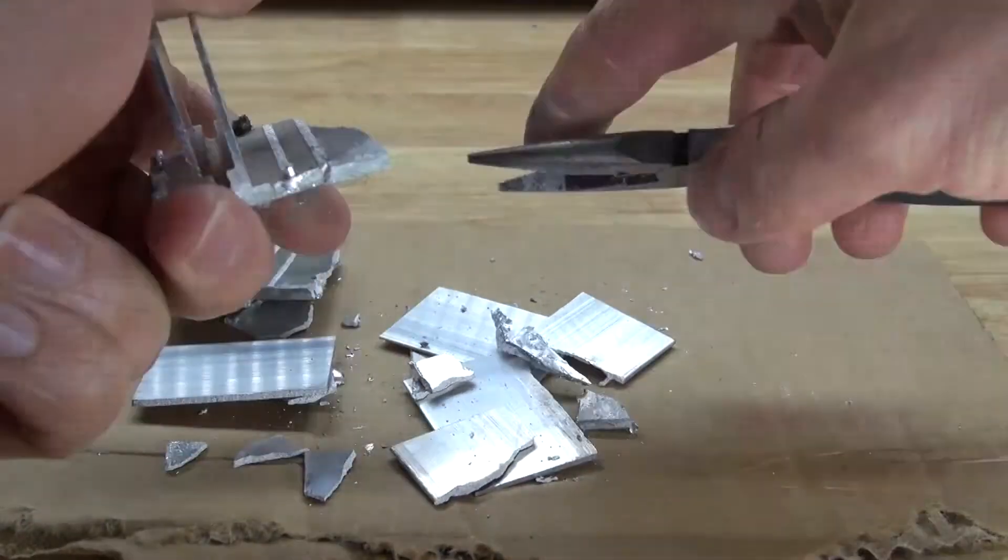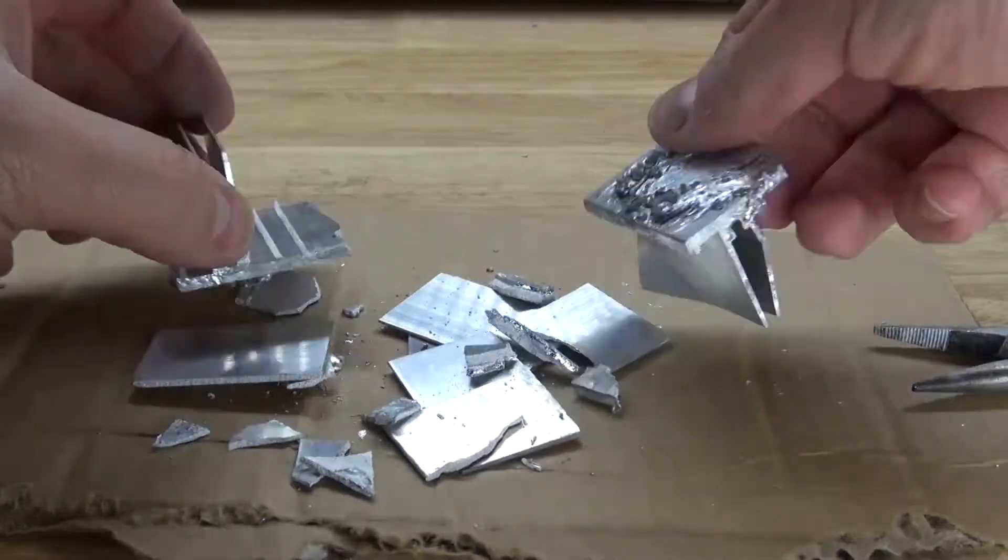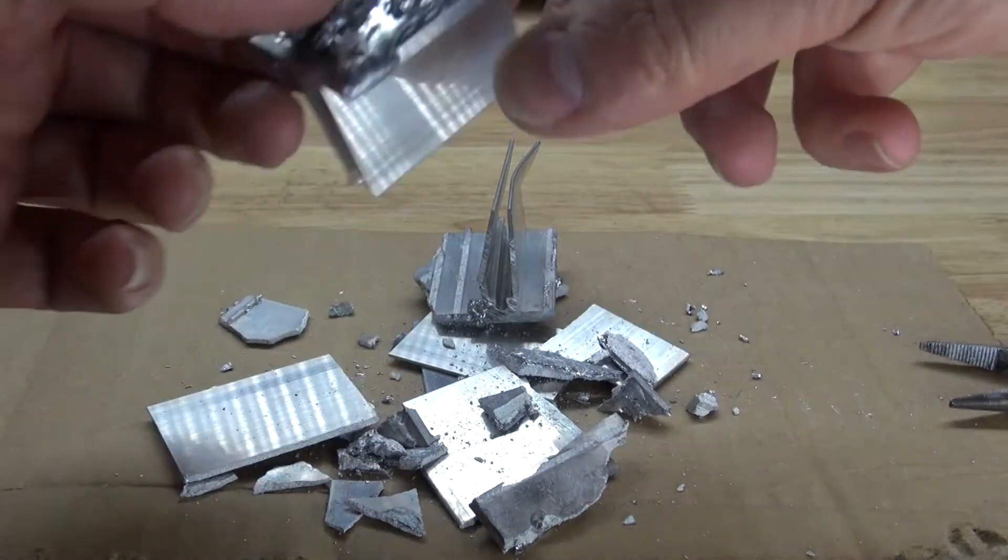Next, I'm going to take some pliers and destroy this heatsink even more. The reason why is so that I can create more surface area to react it with water to be able to release the gallium. Plus, this is also fun.